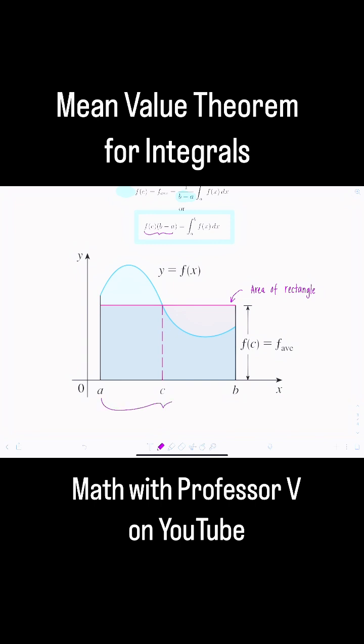What's the base of this rectangle? Well it's the distance from a to b which would be b minus a times its height which is f of c. We'll talk about what f of c is in a hot second.